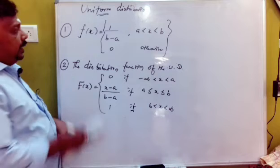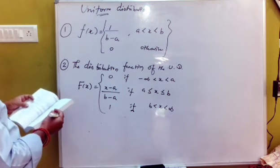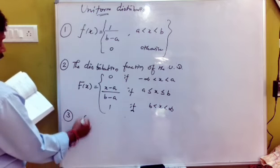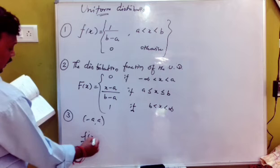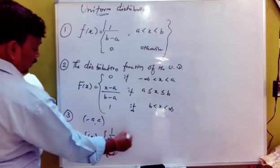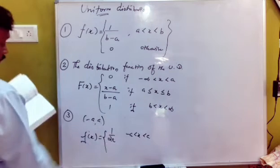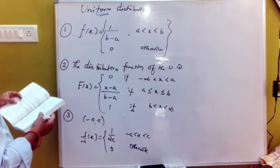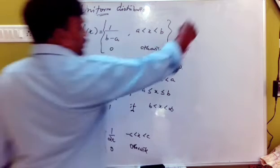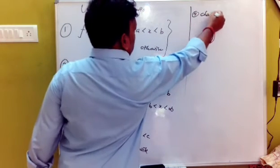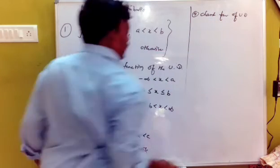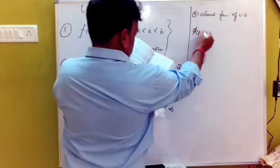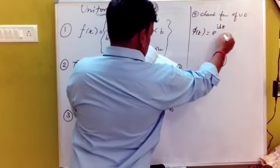Looking at the formula, using limits from a to b, we get 1 by 2a. With a less than x, so 0, and so the basic function of the uniform distribution is established.